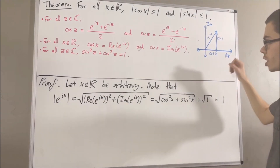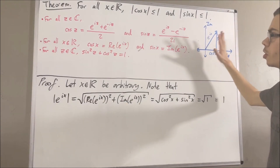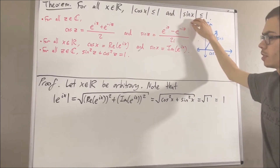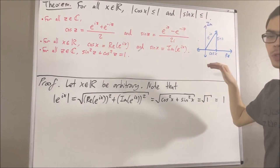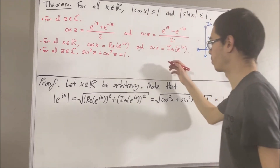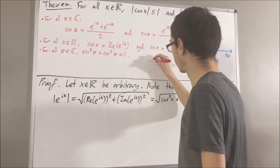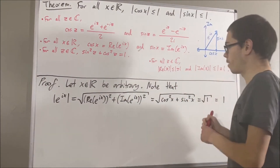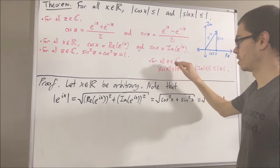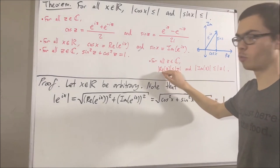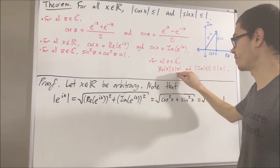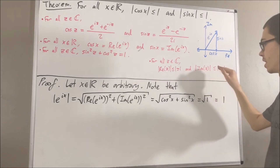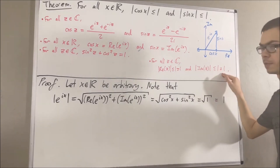And from our discussion earlier, it should follow that these two inequalities hold. The way we could show that is by using the following fact about complex numbers: for all complex numbers z, the absolute value of the real part of z is less than or equal to the absolute value of z, and the absolute value of the imaginary part of z is less than or equal to the absolute value of z.